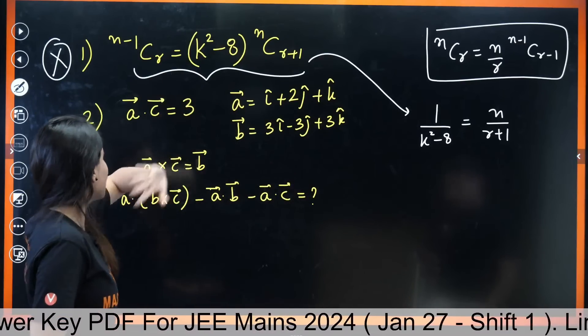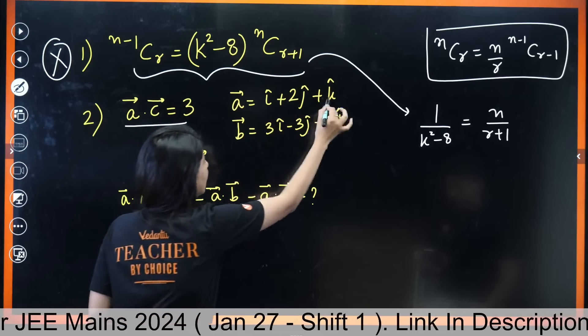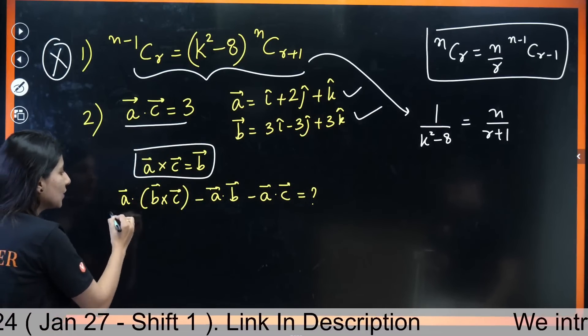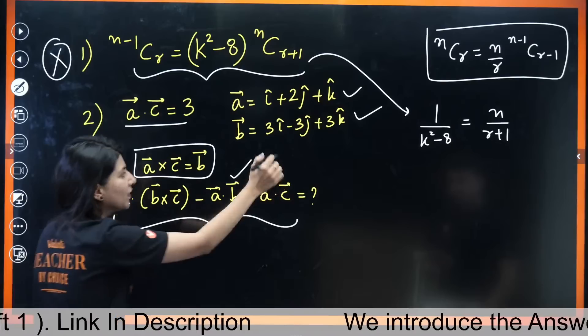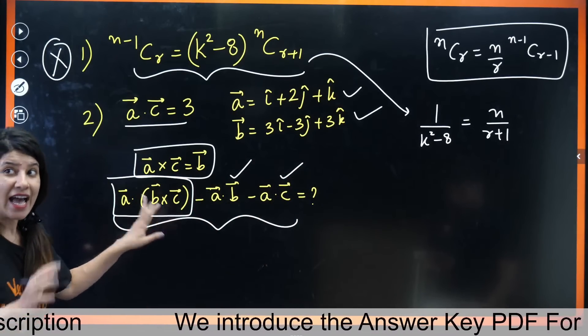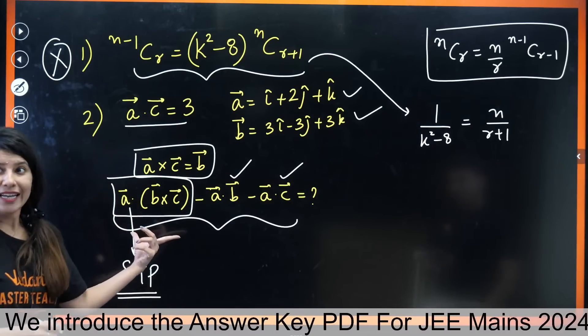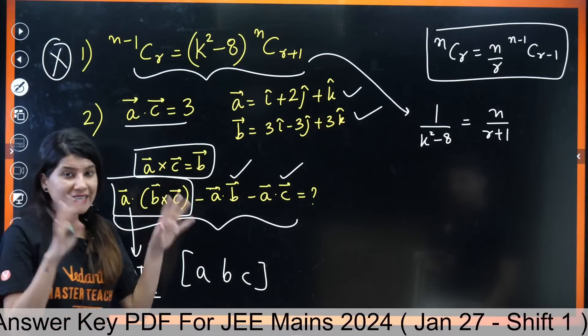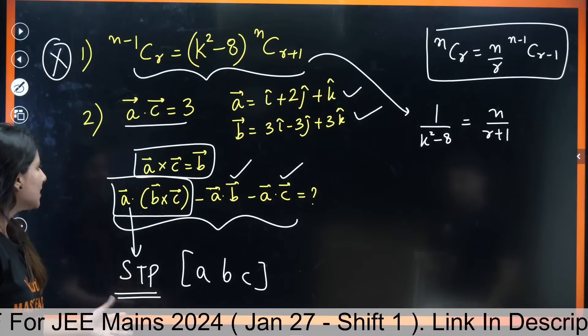The second question is from vectors wherein a dot c was given as 3, a and b both vectors are given to us, and a cross c is given as b. We are here to calculate this value. Now a dot b - you can see a and b vectors are given, we can calculate this. A dot c is already given to you. So the whole controversy is related to a dot b cross c, and this students should know is scalar triple product, although it is not written. It is simple a dot b cross c but this is scalar triple product which can be written as box a b c.